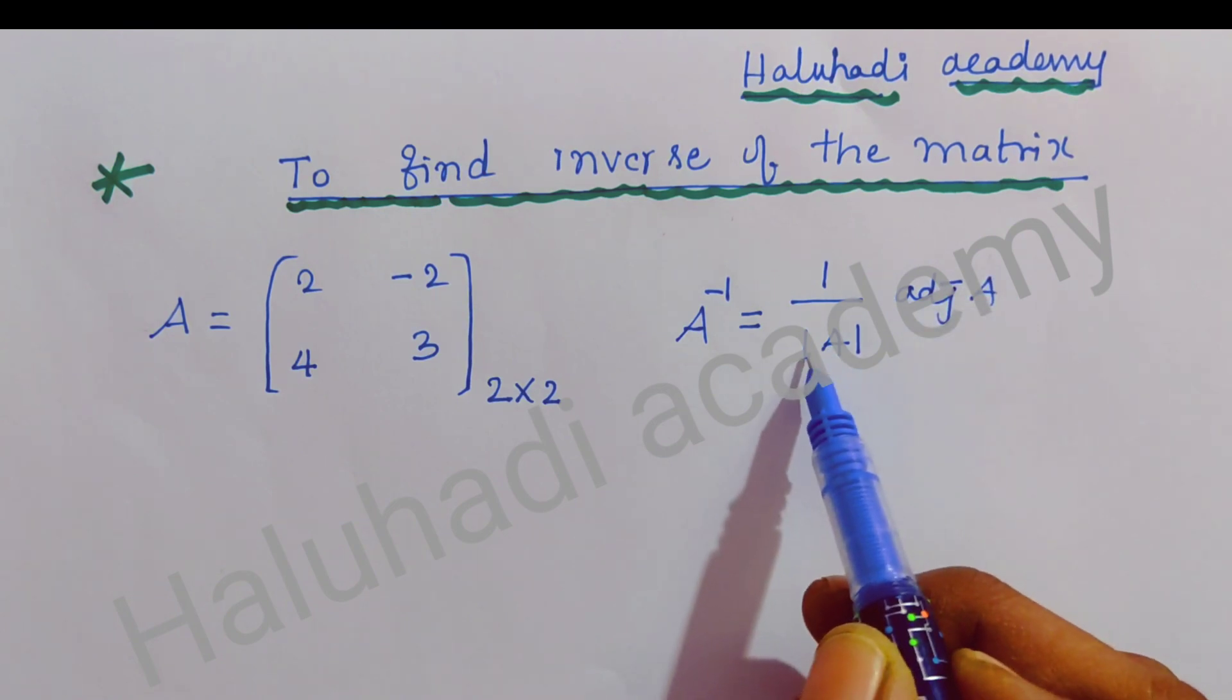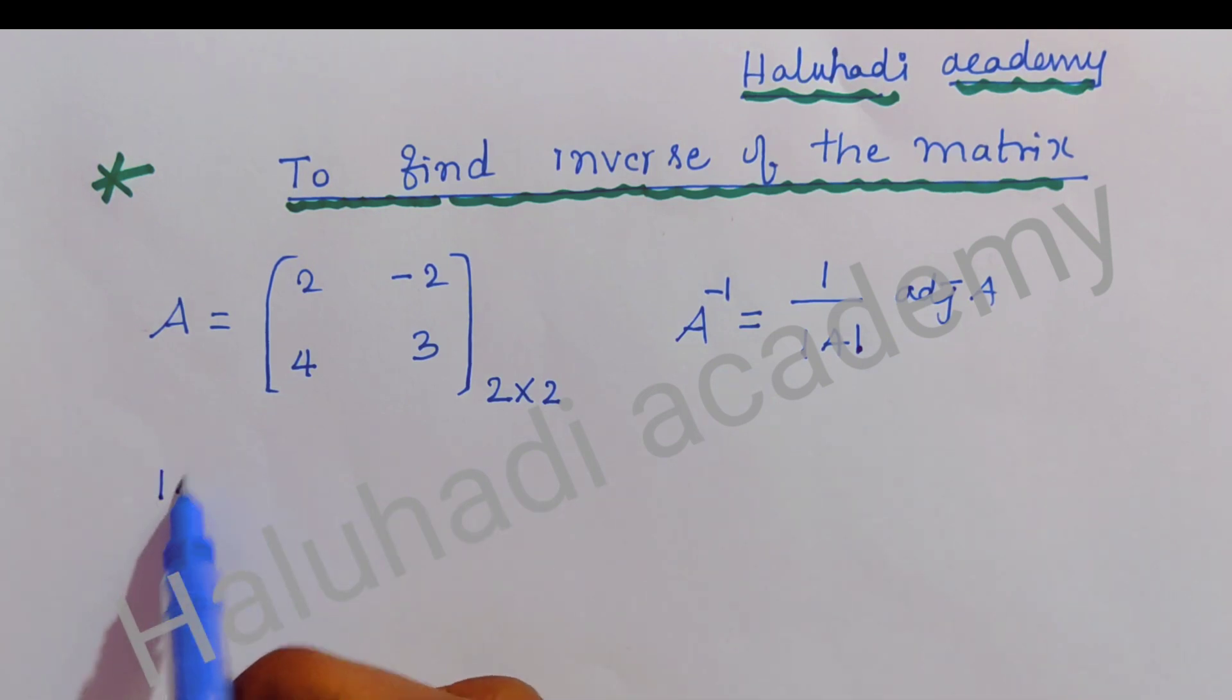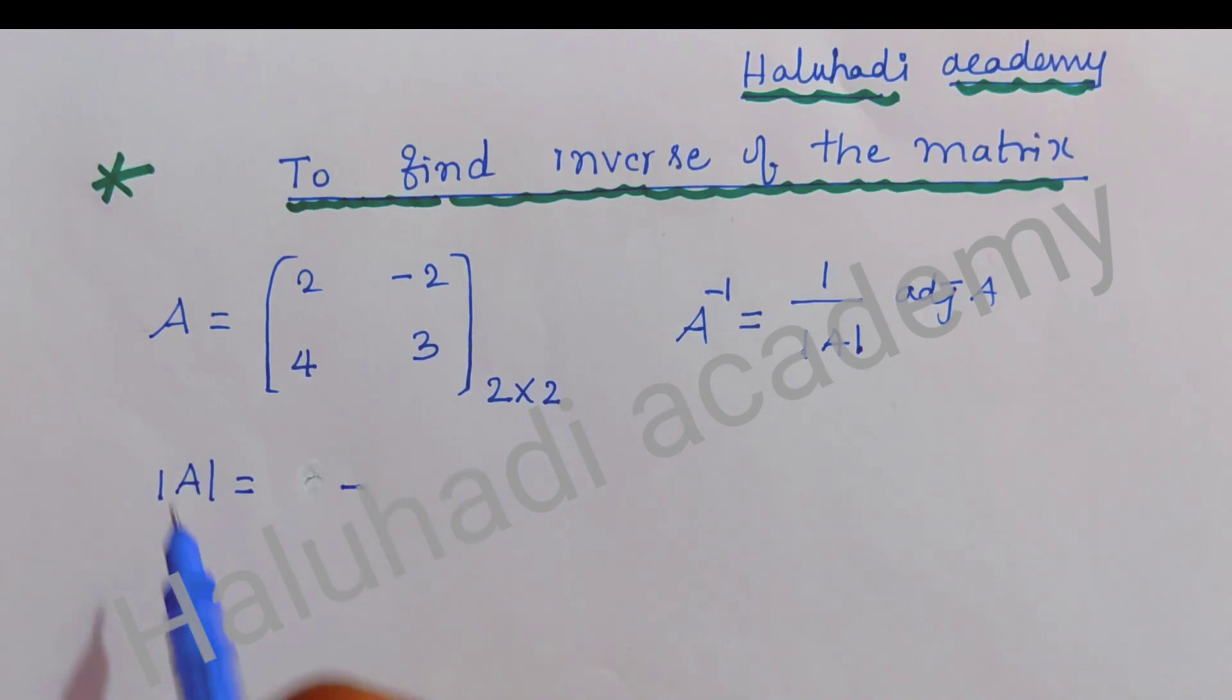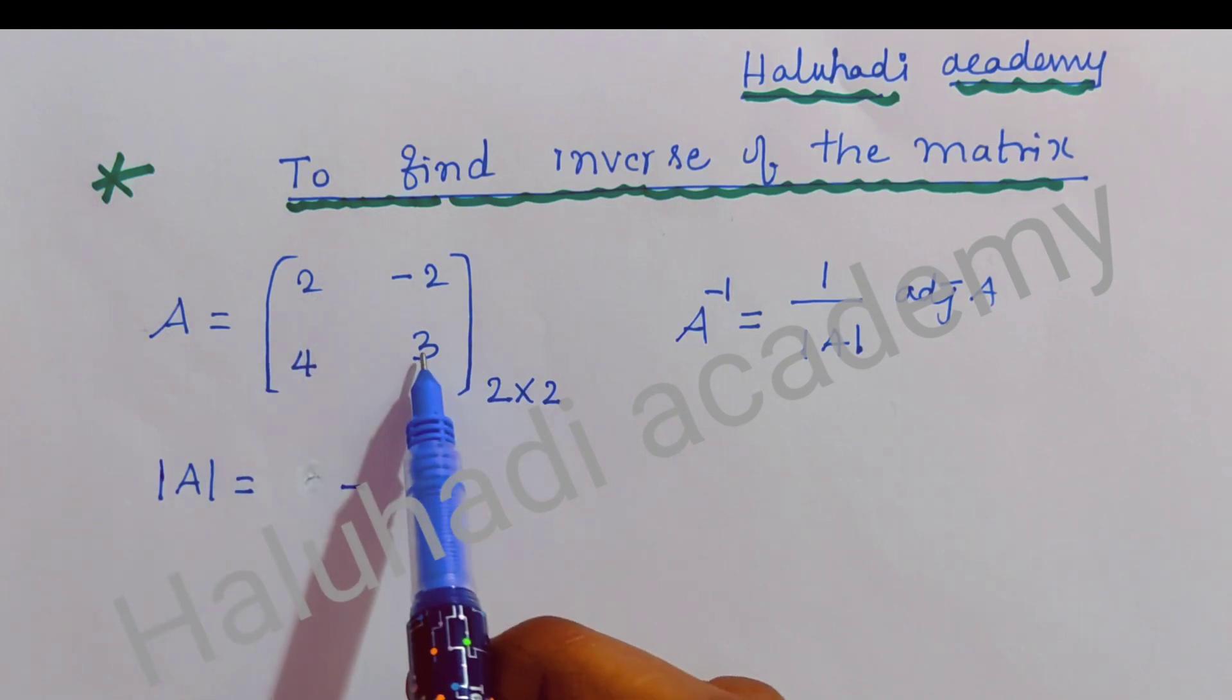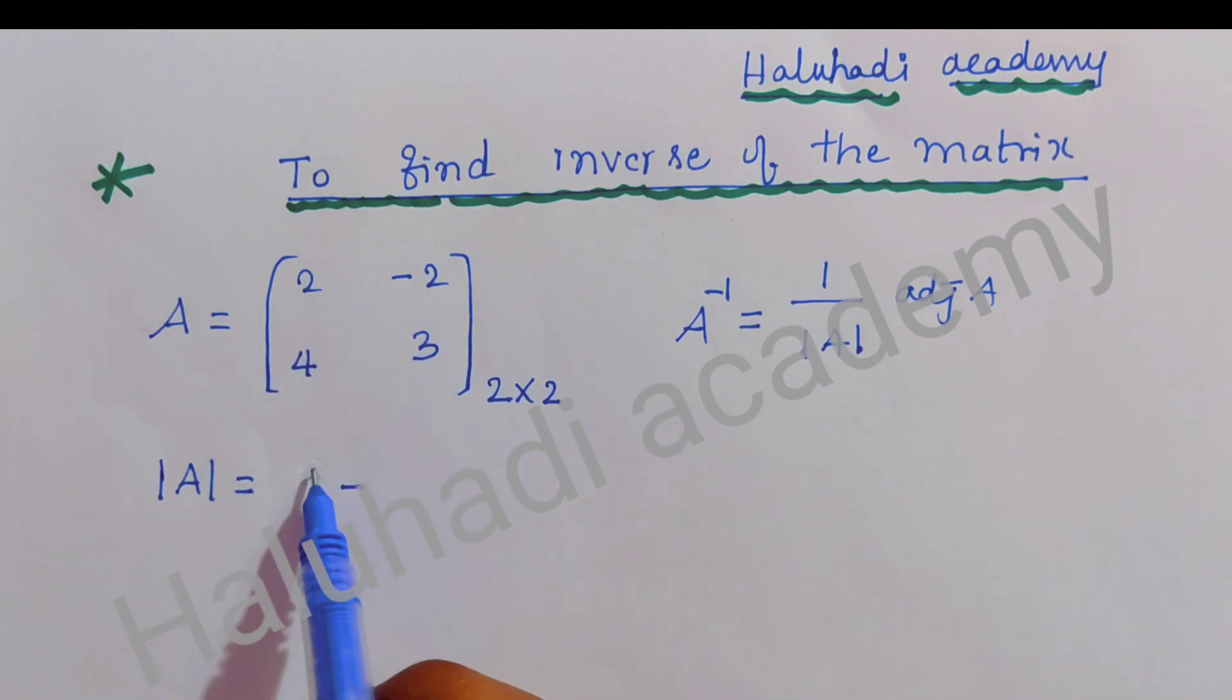Then we have to find determinant of A. Determinant A equals - first we multiply the elements which are on principal diagonal, that is 2 into 3, it is 6.